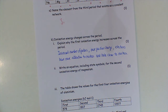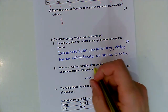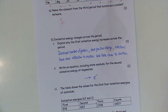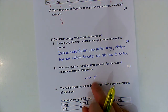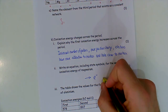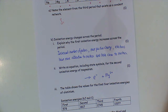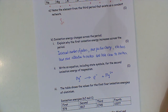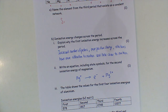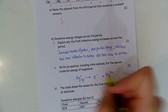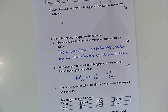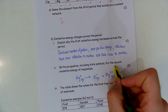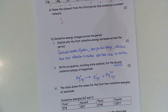Write an equation including state symbols for the second ionization energy of magnesium. Remember, in each ionization energy we are giving off one mole of electrons. This is the second ionization energy, so we're going to end up as an Mg²⁺ ion. If we've lost one electron, that means we already were an Mg⁺ ion. Because it's an ionization energy, everything must be in the gaseous state — you can put (g) on the electrons but it's not necessary.